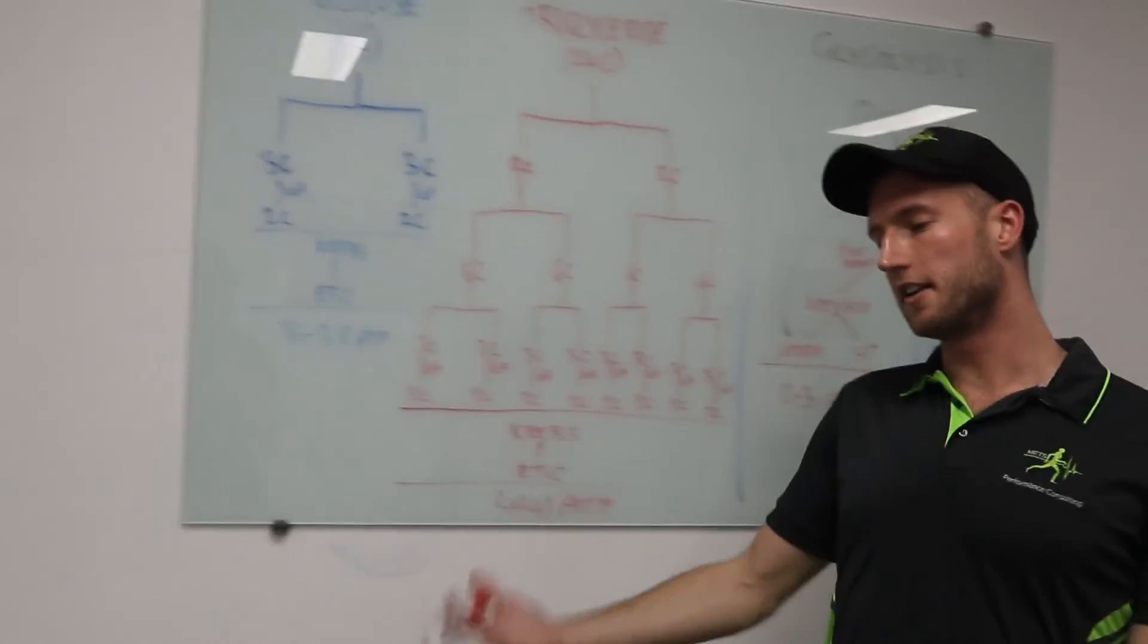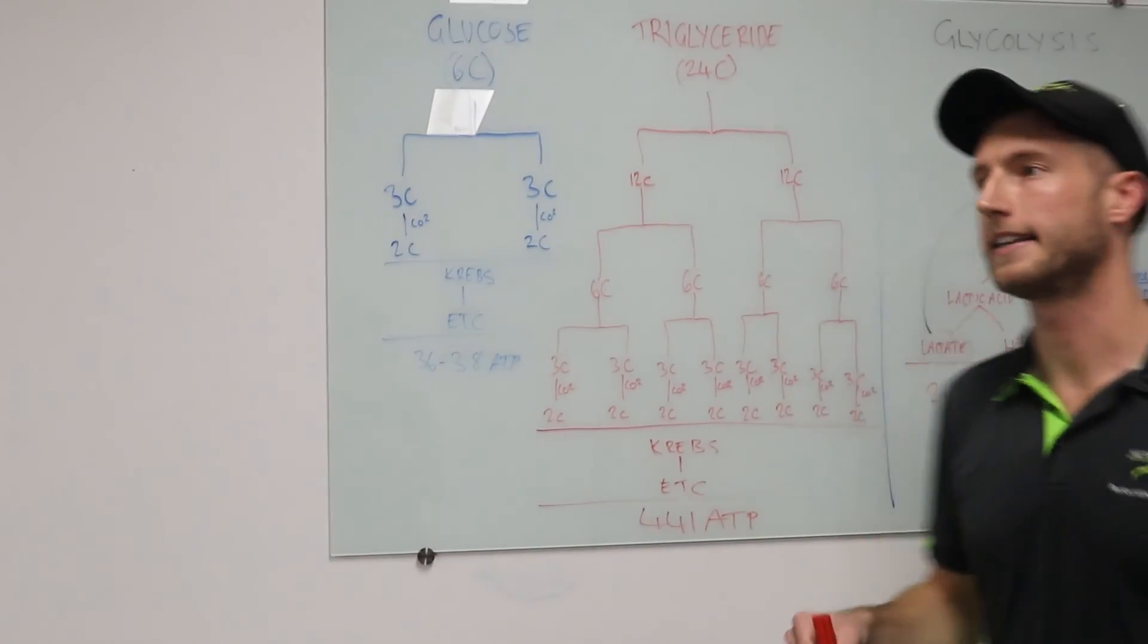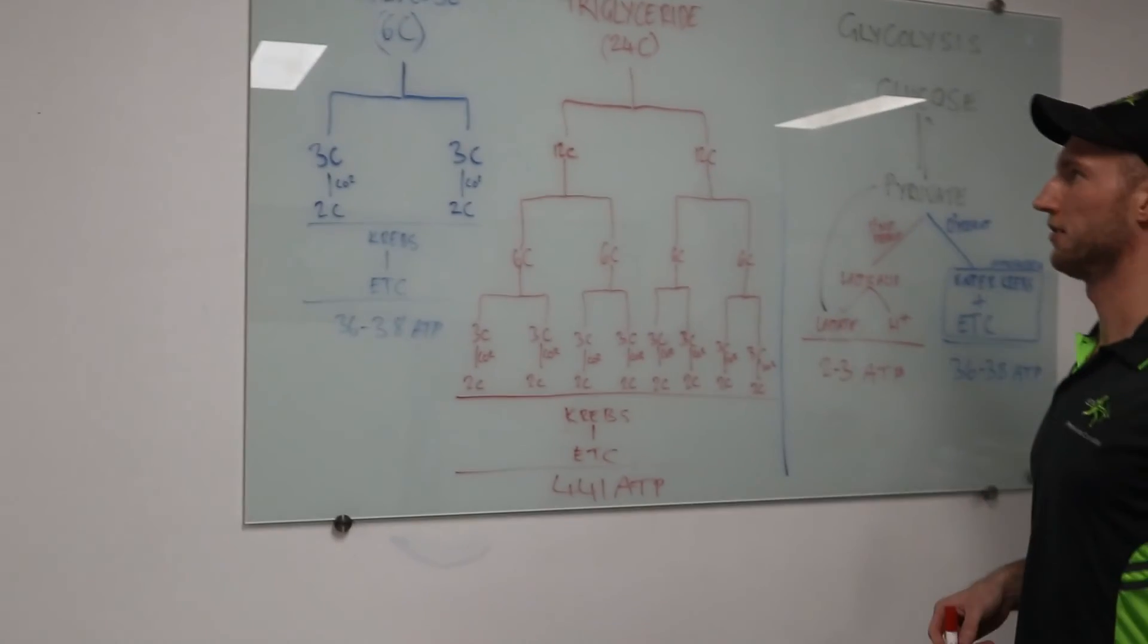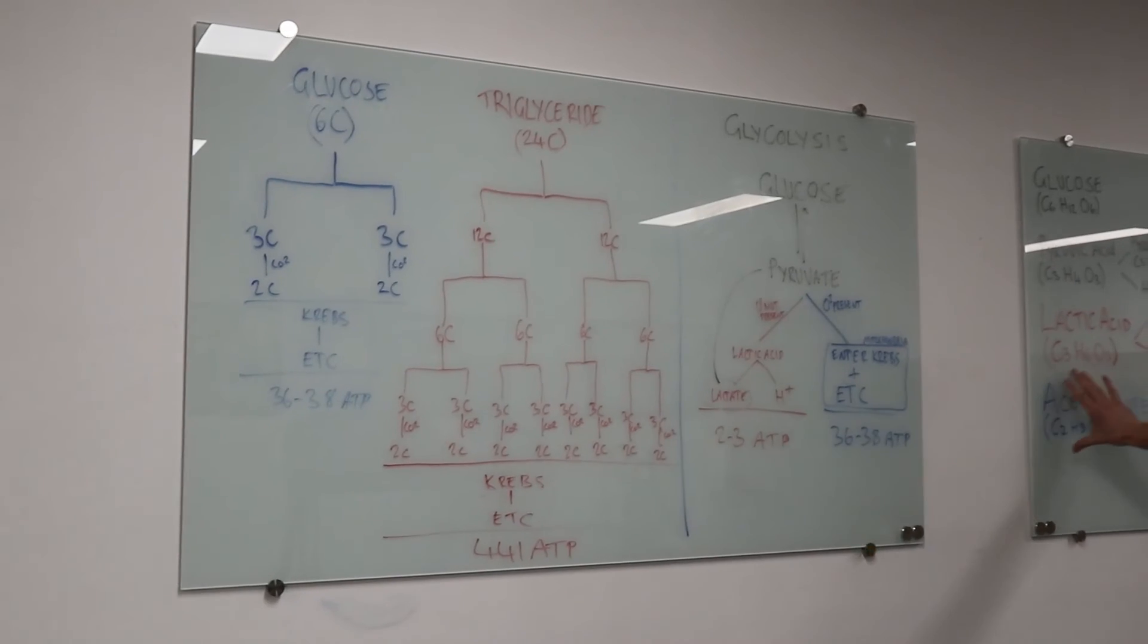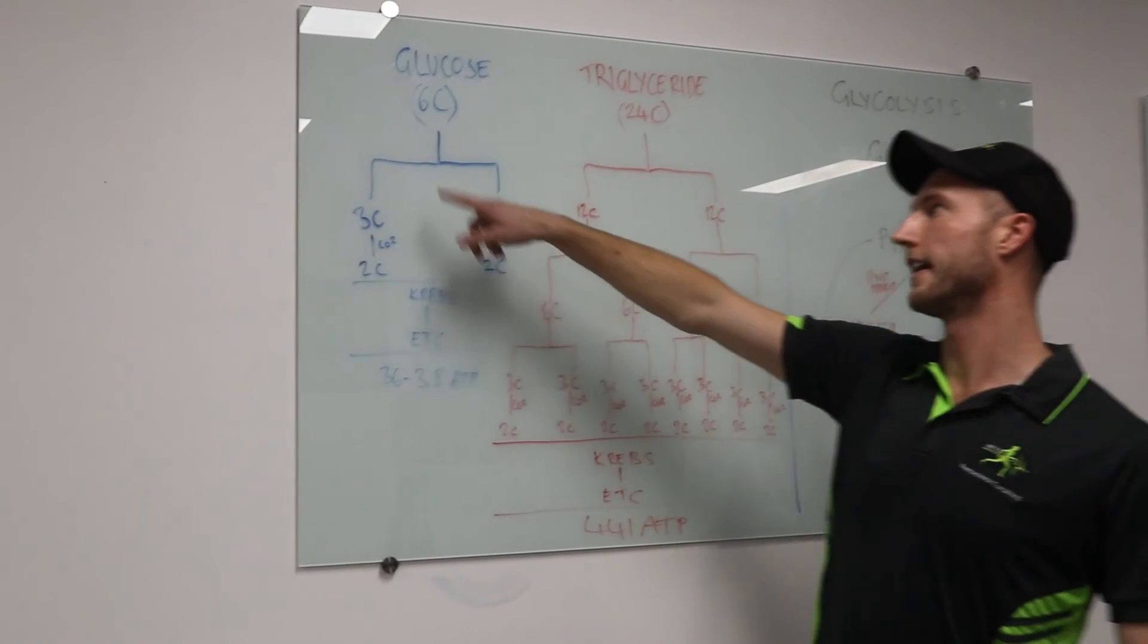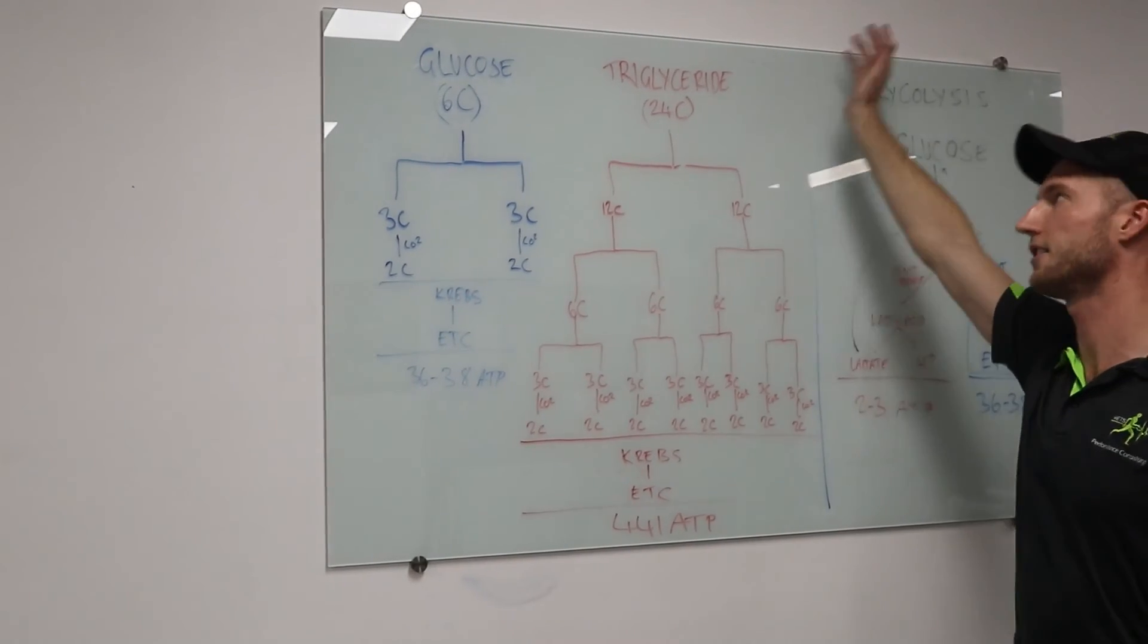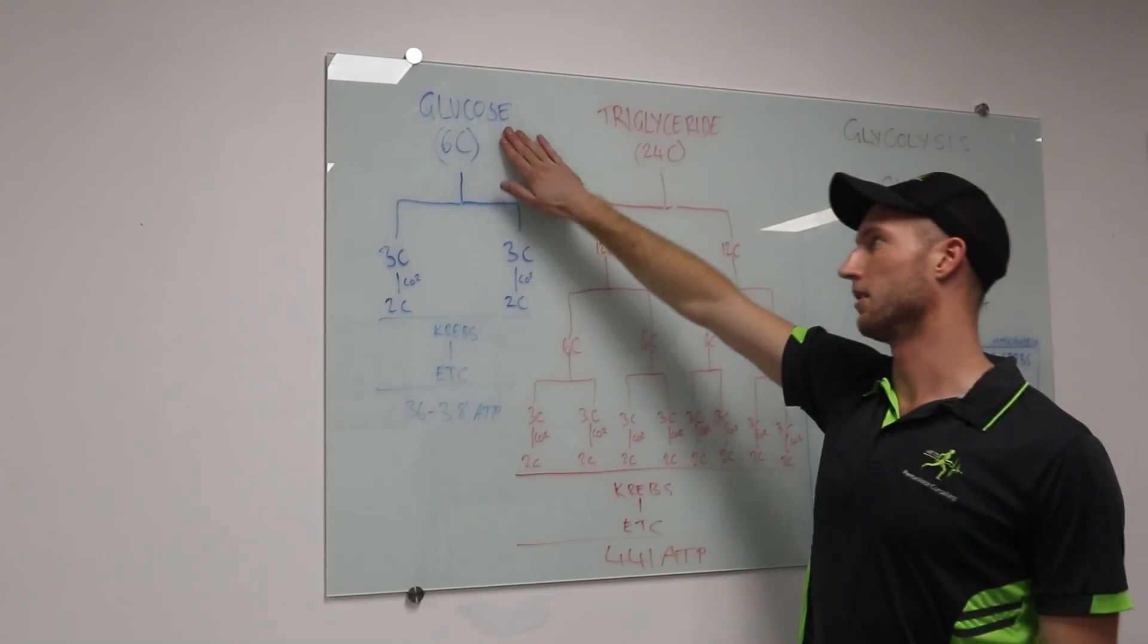Beta-oxidation. Again, you don't need to understand beta-oxidation, but what you do need to know is that fat takes longer and more oxygen to break down than glucose. So the end result, acetyl. We need to get acetyl. We need to get down to a two-carbon element. I don't care if it's a glucose or a triglyceride. We need to get a six-carbon glucose or a 24-carbon triglyceride or a 48-chain triglyceride, whatever it is. We need to get these down to two.